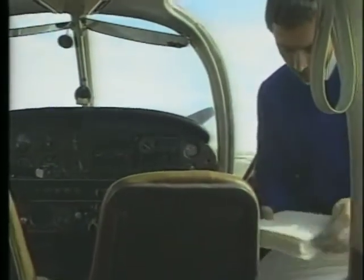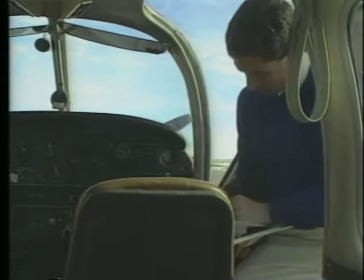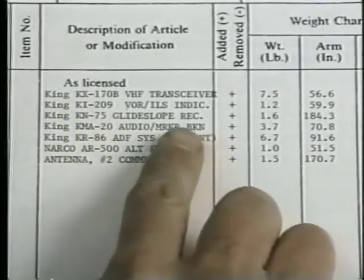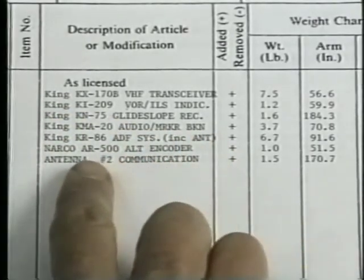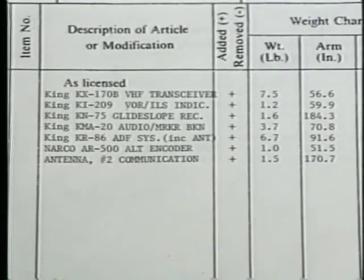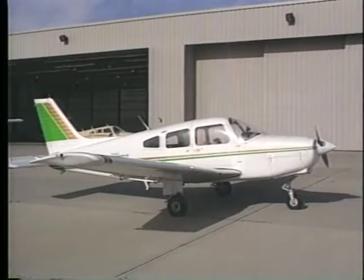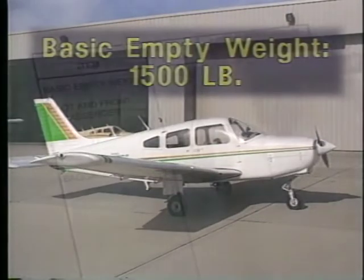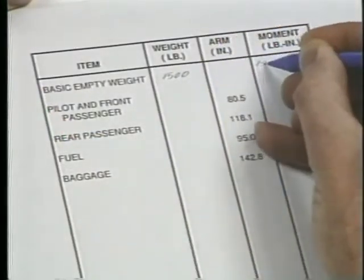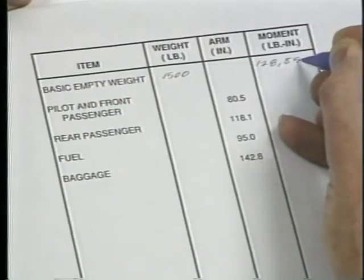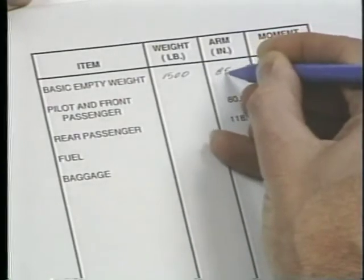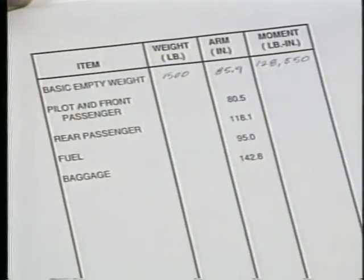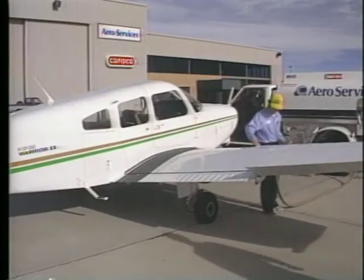Your first step is to find the basic empty weight and moment in the aircraft's weight and balance records. This figure includes the weights of all permanently attached items. Therefore, if any equipment is added or removed, the weight and balance records must be adjusted. For this problem, let's assume the basic empty weight is 1,500 pounds. This weight and its moment, along with its CG if given, is then transferred to a worksheet which contains four columns. You must then complete the weights and moments for the rest of the useful load.